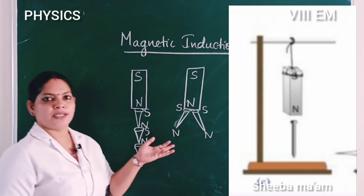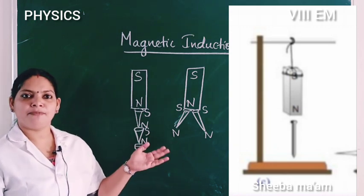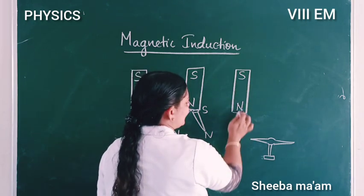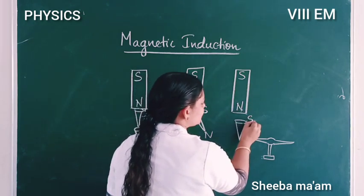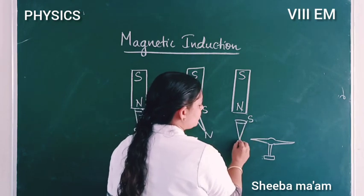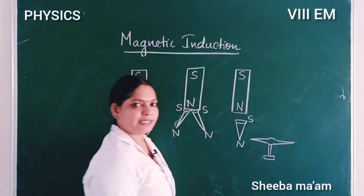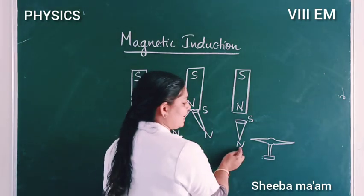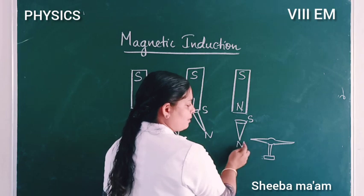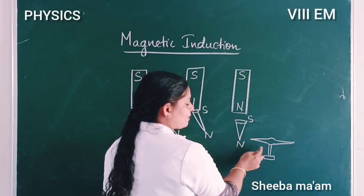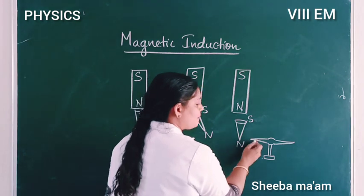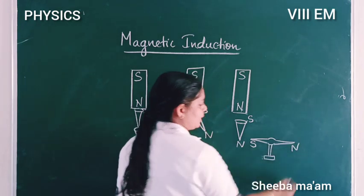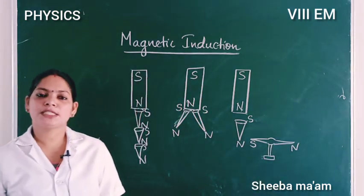Look at this next figure. Let us mark the polarity: south and north. One compass needle — what will the compass needle be attracted to? It is attracted to the north. This is attracted to the magnet, south. The magnetic composite is south, and north is here. These are the poles marked.